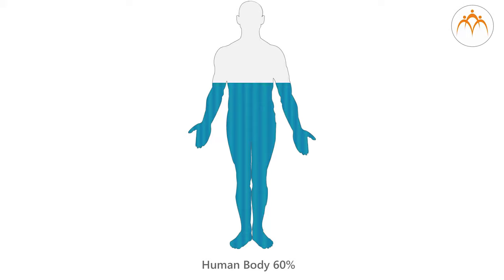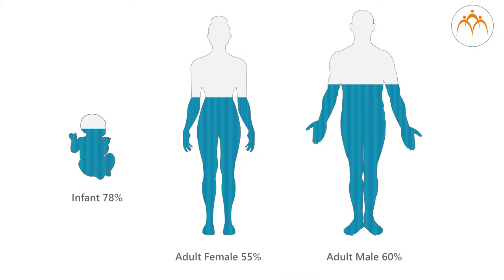Extra information: At birth, the human body contains 78% water. Adult males have about 60% water, and adult females have about 55% water.